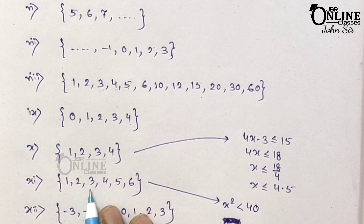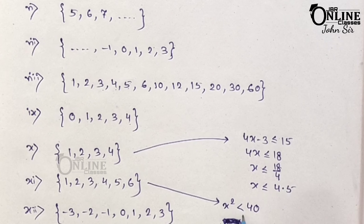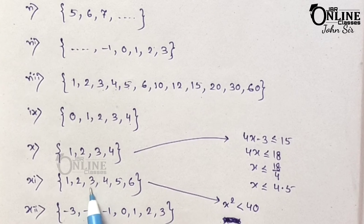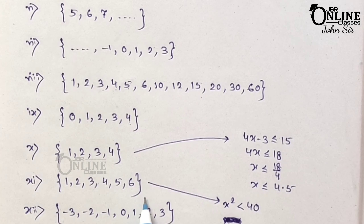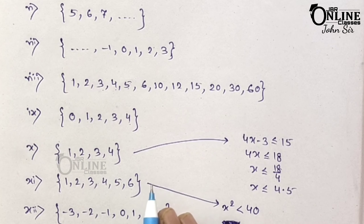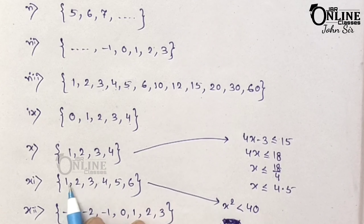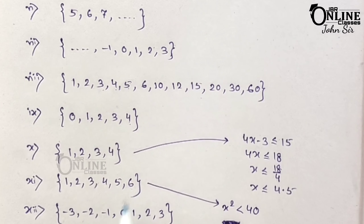Sum number 11: x such that x belongs to natural numbers and x squared is less than 40. The squares are: 1 squared = 1, 2 squared = 4, 3 squared = 9, 4 squared = 16, 5 squared = 25, 6 squared = 36. The next is 7 squared = 49, which is greater than 40. So the last number is 6. The answer is {1, 2, 3, 4, 5, 6}.